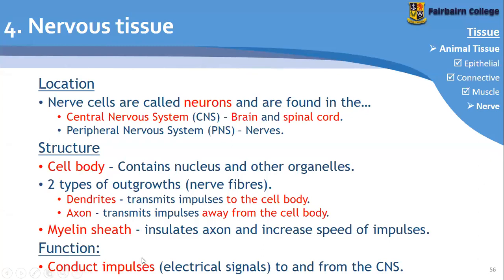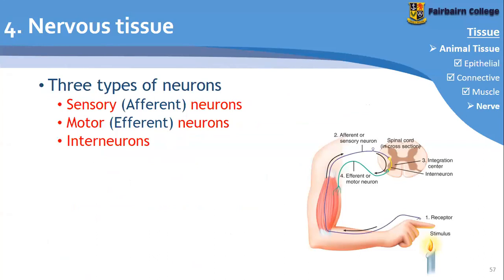It conducts impulses and these impulses contain messages for the different parts of your body. It's literally like electricity that flows in your nerves, brain, and spinal cord. The way it works is more complicated — in grade 10 we just want to see how it looks. So you get three types of neurons: sensory neurons, motor neurons, and interneurons.